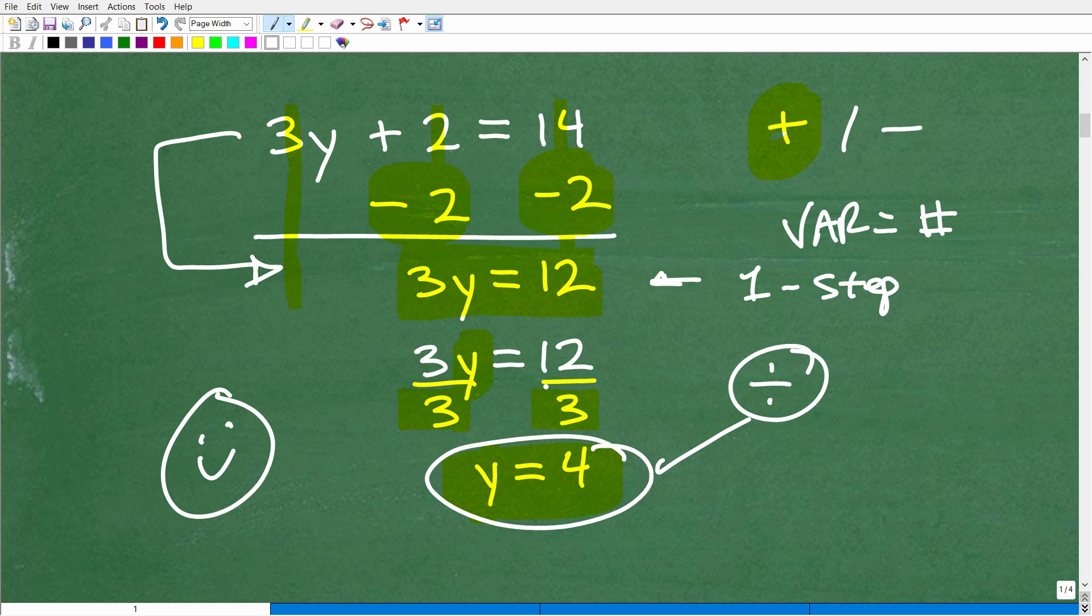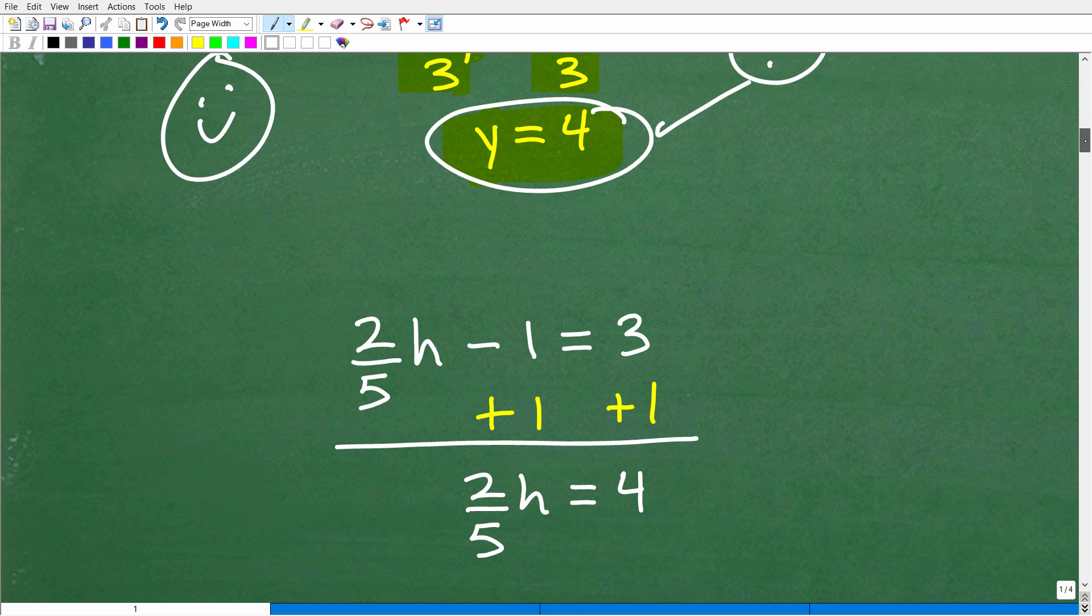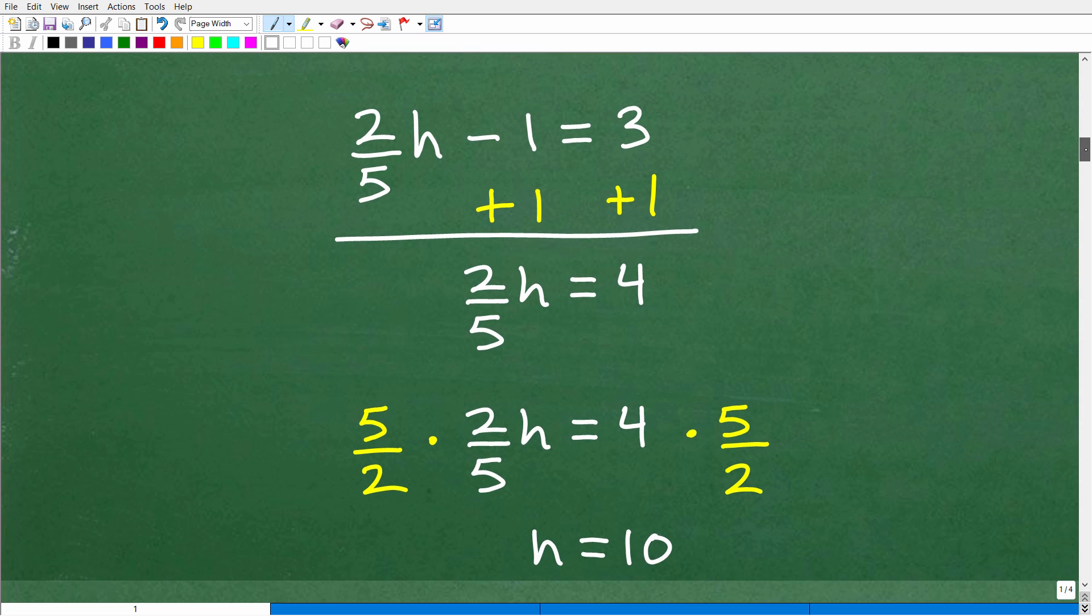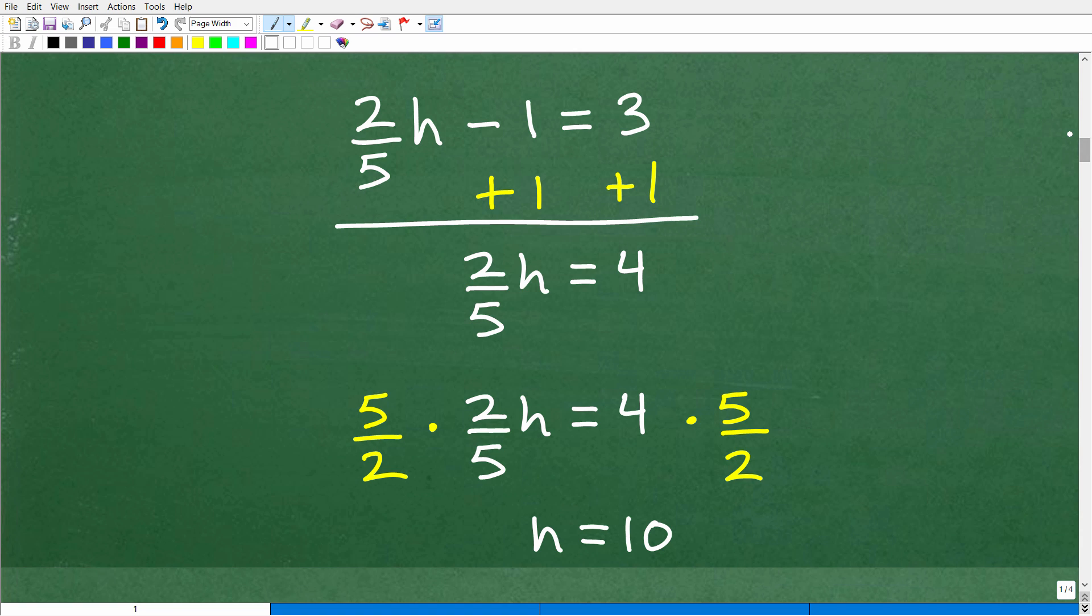But let's move on to one more example. Here again, I talked about using division. But let's take a look at an example where we're going to use multiplication on our second step. So here we have 2 fifths h minus 1 is equal to 3.